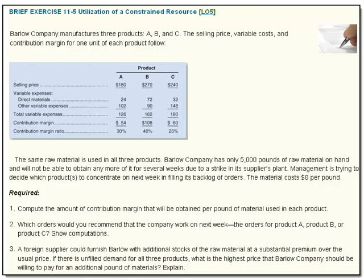Let's take a look at this brief exercise where we're going to utilize a constrained resource. Barlow Company manufactures three products A, B, and C. The selling price, variable cost, and contribution margin for one unit of each product appear in that blue table. The same raw material is used in all three products. Barlow Company has only 5,000 pounds of raw material on hand and will not be able to obtain any more for several weeks due to a strike at its supplier's plant. Management is trying to decide which product to concentrate on next week in filling its backlog of orders.